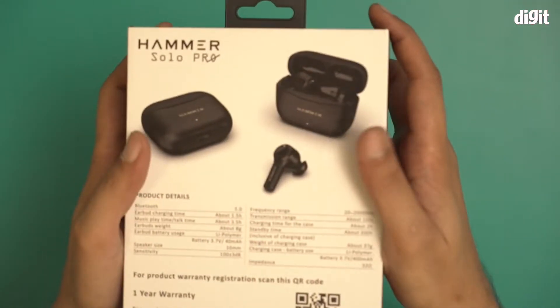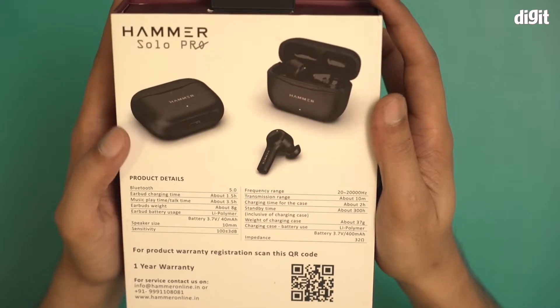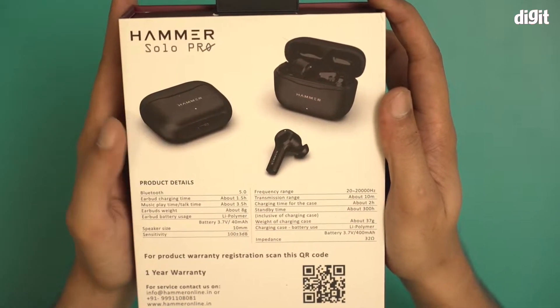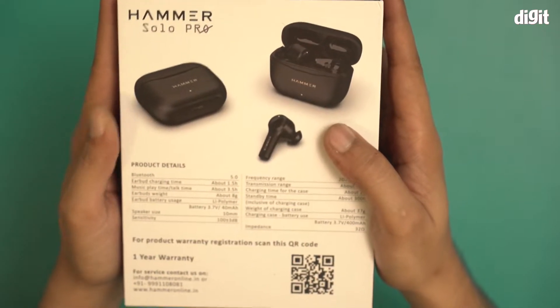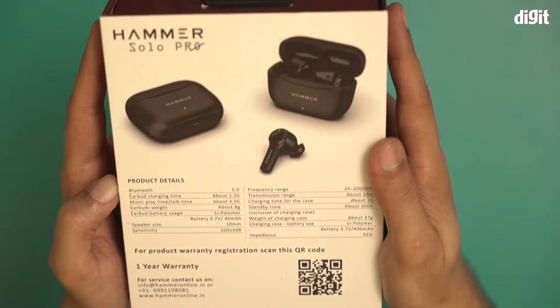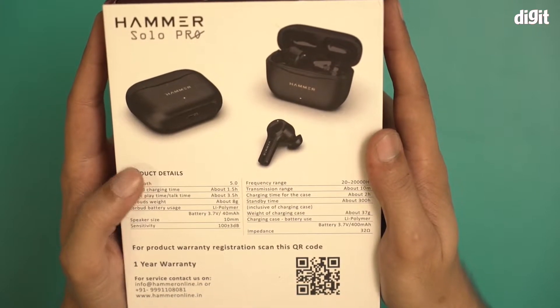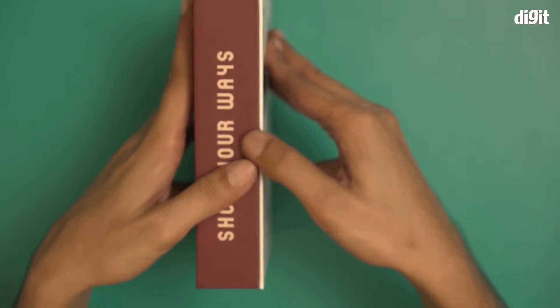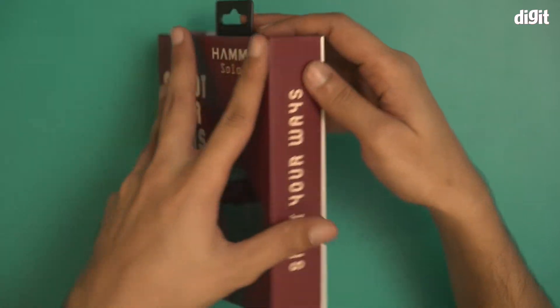Let's quickly take a look at other information on this box. It says that the charging time is 1.5 hours and music playtime or talk time is about 3.5 hours. The earbuds weigh around 8 grams, very light, and it comes with a 400 mAh carrying case providing a standby time of 300 hours. That's more or less all the information on the box. Let's open this box and show you the contents inside.